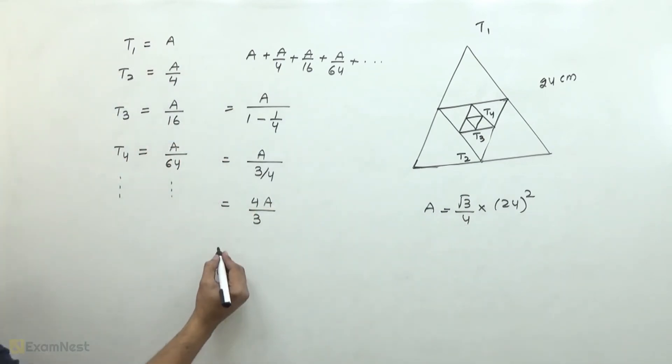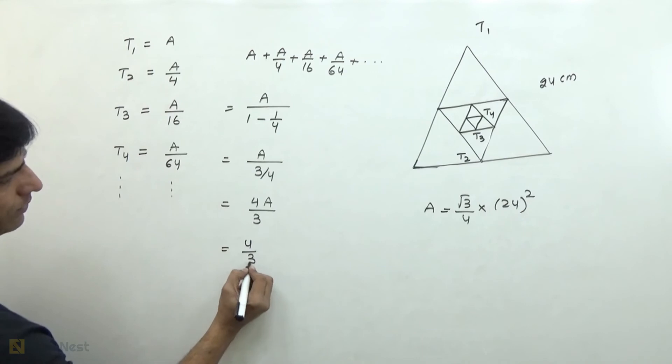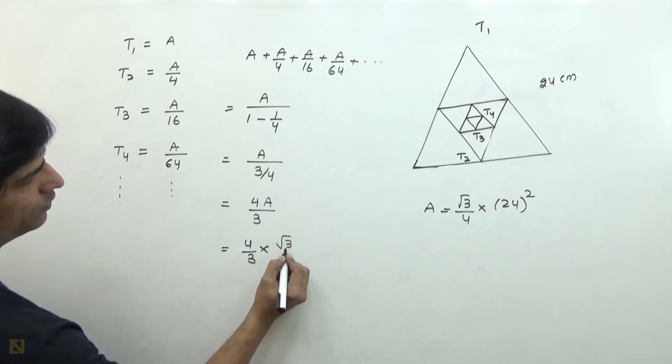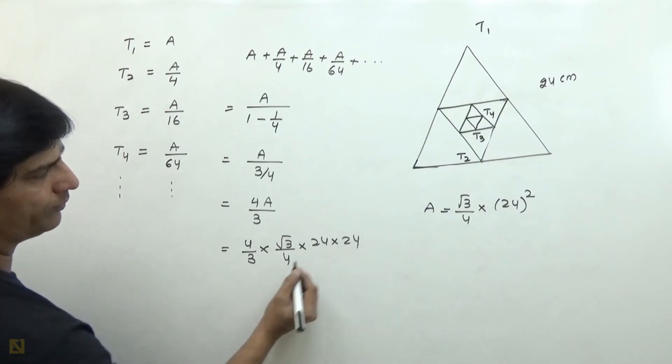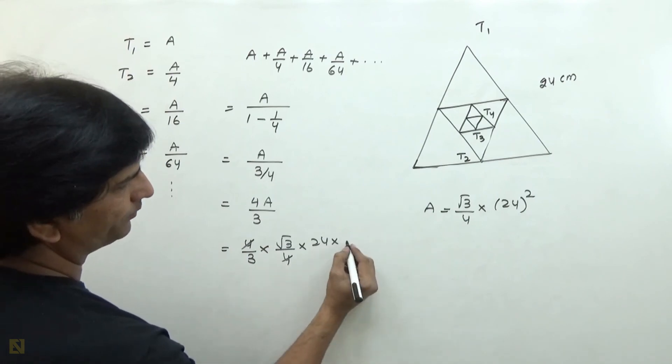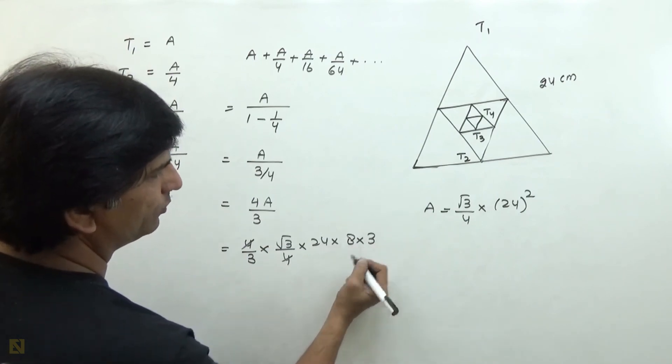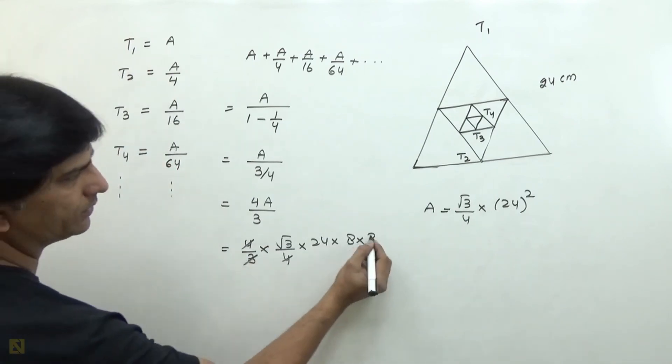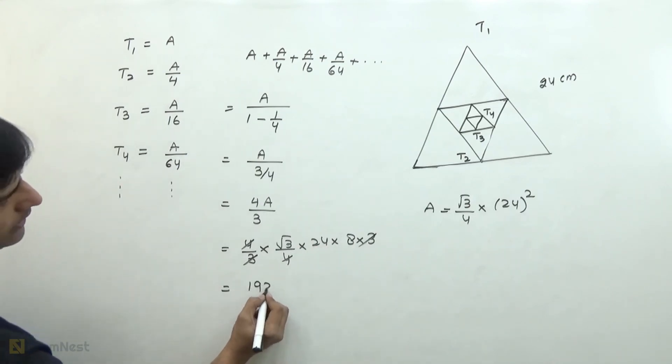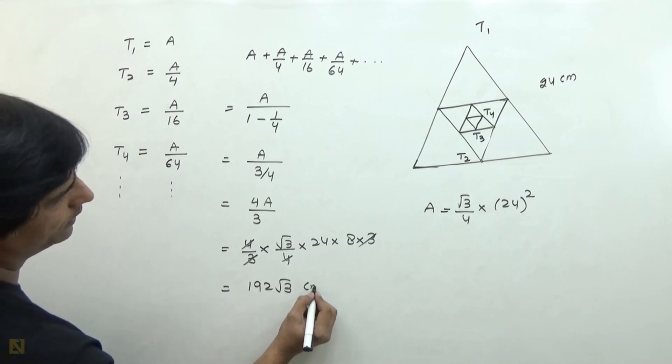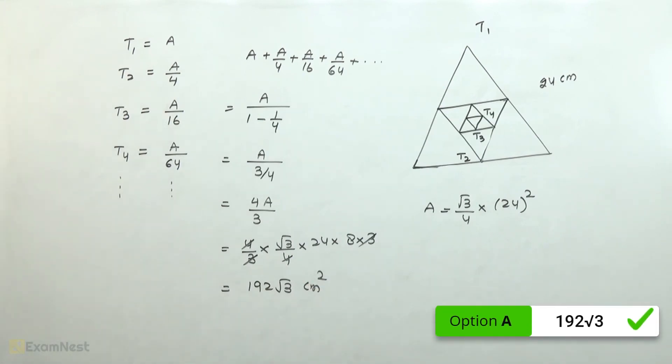Substituting this value, we get 4 over 3 times root 3 by 4 times 24 times 24. The 4s cancel. We can write 24 as 8 times 3, and the 3s cancel. 24 times 8 gives us 192 root 3 cm squared as our desired answer.